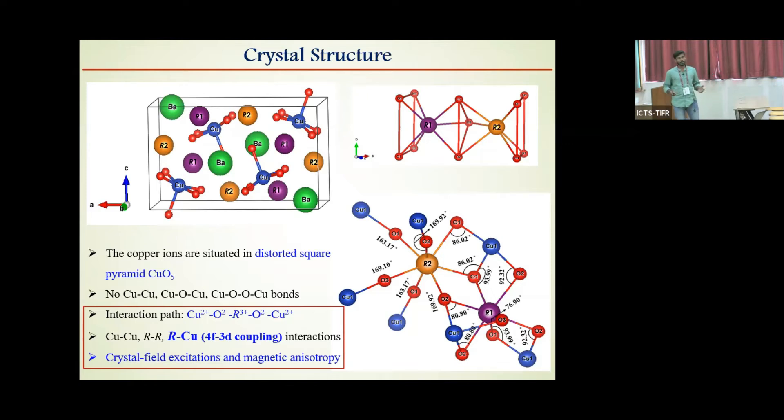Since there are no copper-copper or copper-oxygen-copper bonds in this structure for magnetic exchange, the possible magnetic interaction path is through rare earth. Therefore, due to competition between copper-copper or rare earth-rare earth and rare earth-copper for 3D coupling interactions, these compounds exhibit very interesting magnetic properties. Also, crystal field excitations and magnetic anisotropy associated with each rare earth is different, which means each compound with different rare earth can show interesting magnetic properties. And indeed, we found that all compounds from this family exhibit interesting magnetic properties and thereby magneto-electric or multiferroic properties.